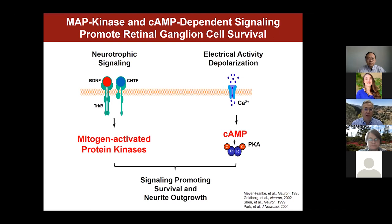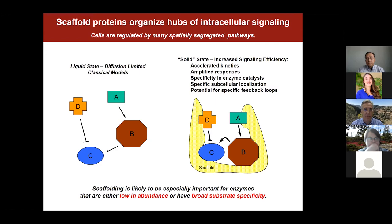While retinal ganglion cells are stressed in diseases — whether from damage to the optic nerve in drusen or the optic nerve head — we must maintain survival of those cells to preserve vision. By manipulating these signaling pathways, we may have potential therapeutic strategies to preserve these critical cells. My lab is interested in how signaling pathways within cells are organized.